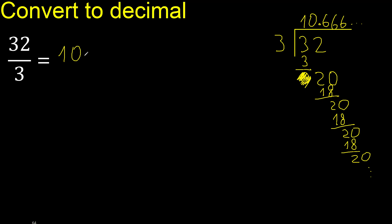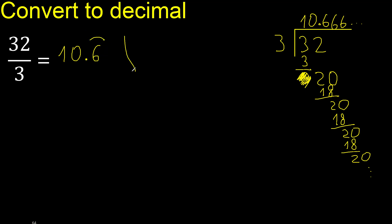After the decimal point, 6 repeats. Therefore the answer is 10.666... — 6 repeating. Finish.